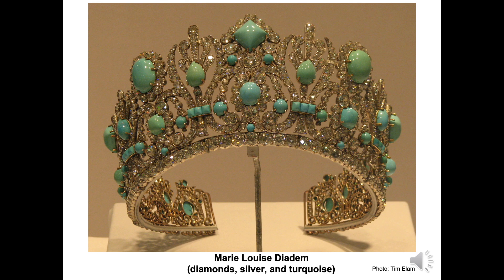In early civilizations, minerals were important to humans. Minerals served as items of economic trade, such as gold, silver, turquoise, salt, and borax thousands of years ago. Pictured is the Marie Louise diadem, a crown from 19th century Europe made of diamonds, silver, and turquoise. Originally, emeralds occupied the spots now filled with turquoise. Minerals have also been historically mined for utilitarian reasons, such as stone walls and spear points.